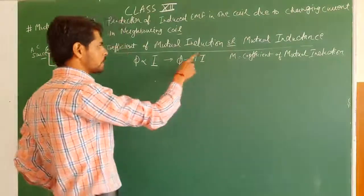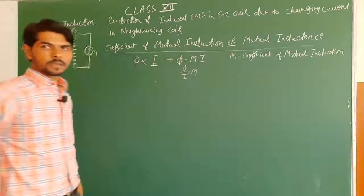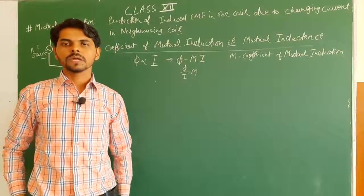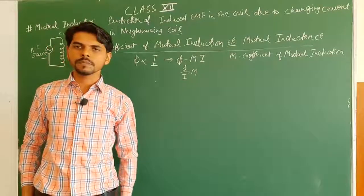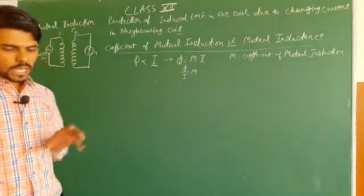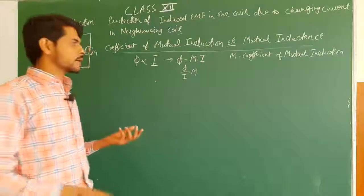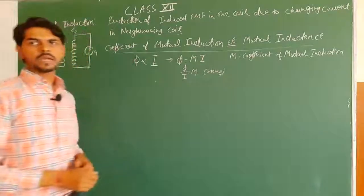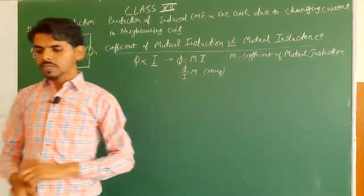The coefficient of mutual induction is M, and from φ = M·I, we get M = φ/I — that is flux per unit current. Flux per unit current is called the coefficient of mutual induction. Its unit is Henry, represented as H. Henry is the SI unit of both coefficient of self-induction and coefficient of mutual induction.